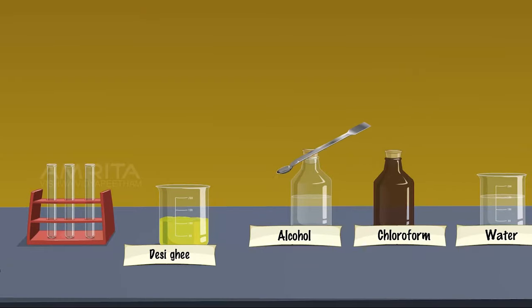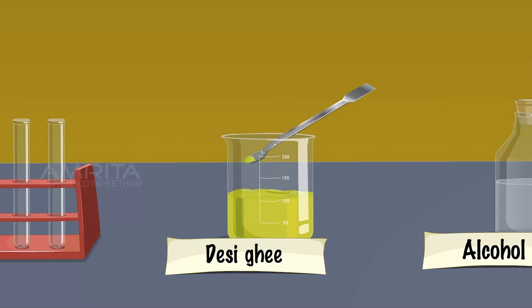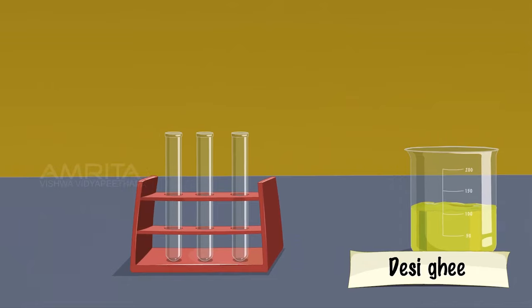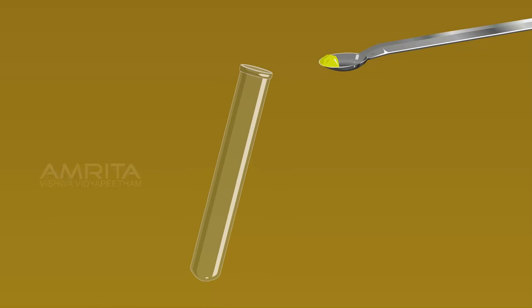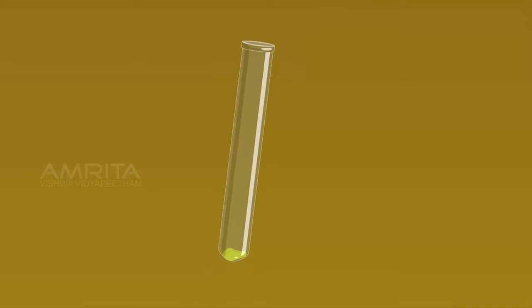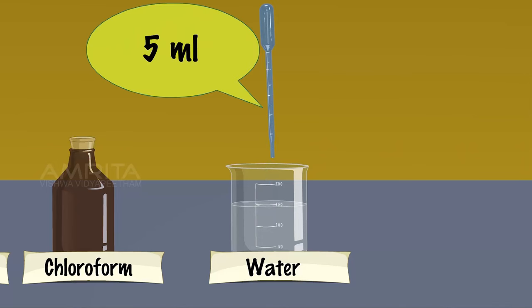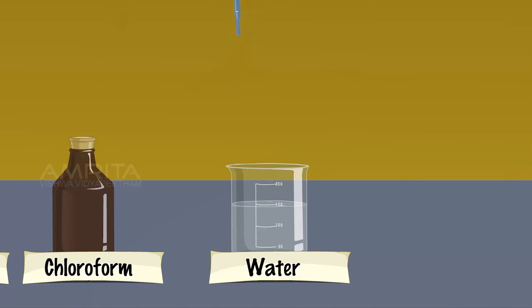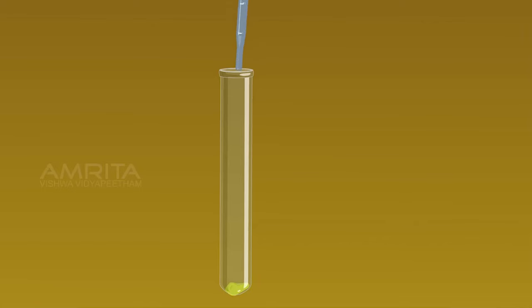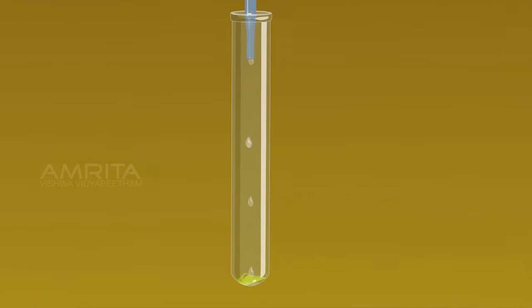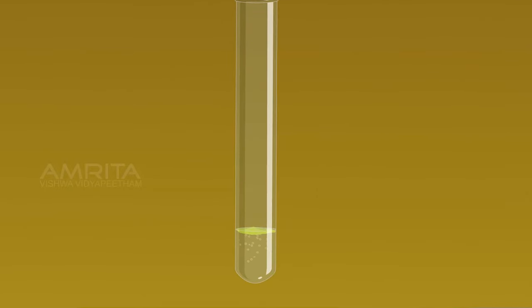Desi Ghee. Using a spatula, take a small amount of desi ghee in a test tube. Using a dropper, take about 5 ml of water and add it into the test tube containing desi ghee. Desi ghee is immiscible, i.e., not mixable in water.